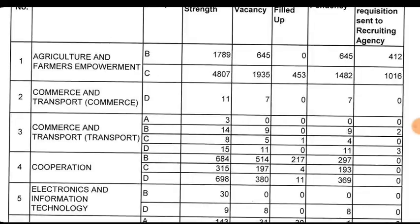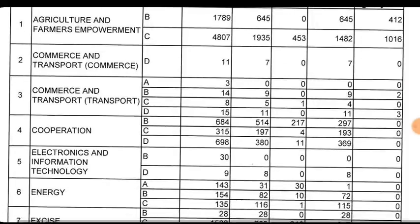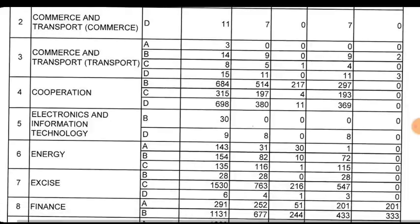The Commercial and Transport Department has Group D with 412 posts. The total Group D for Commercial and Transport is 2nd and 3rd post combined. The Corporation Department has a 3rd post listed.